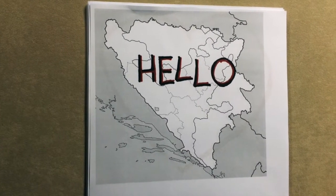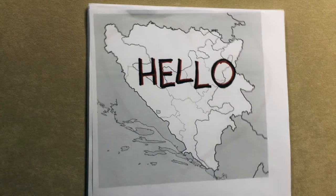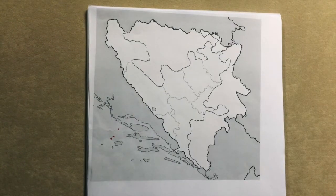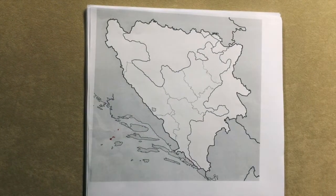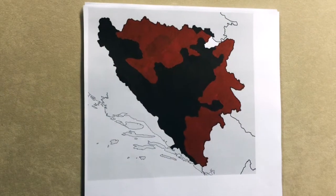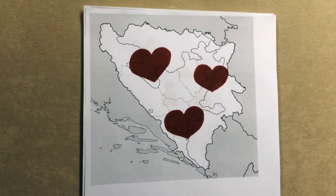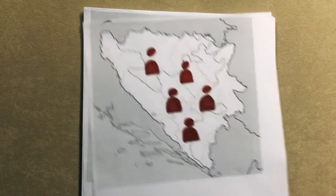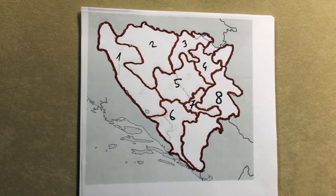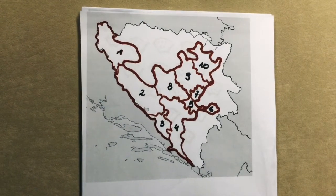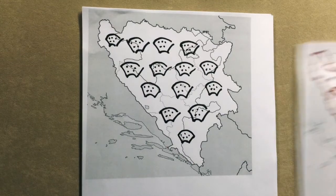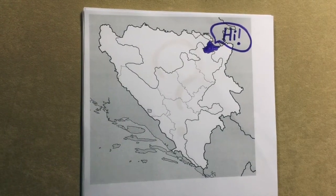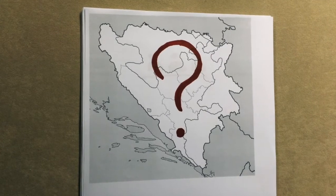This is Bosnia and Herzegovina. It resides in the heart of the Balkans. It is one country, made of two entities, hosting three major ethnicities, electing five presidents, split into eight general electoral units, overlapping ten cantons managed by fourteen governments — and then there's Brčko. How does it work?